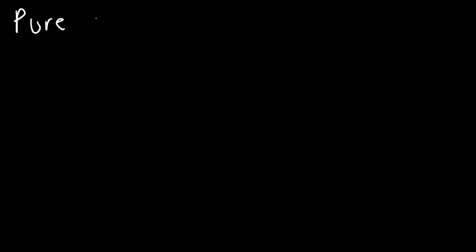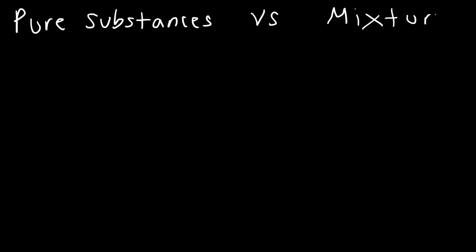In this video we're going to focus on distinguishing pure substances from mixtures. A pure substance has constant composition. Pure substances can be elements or compounds, but they always have a definite and constant composition. A mixture is basically a combination of multiple pure substances and can have variable composition.